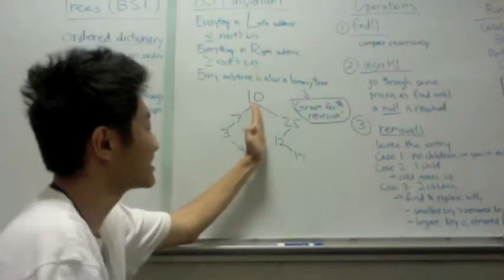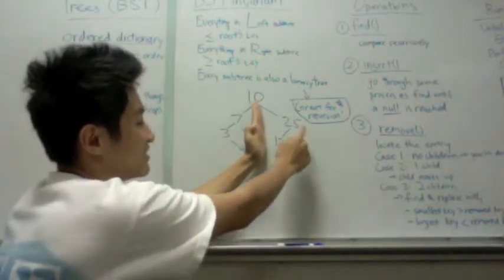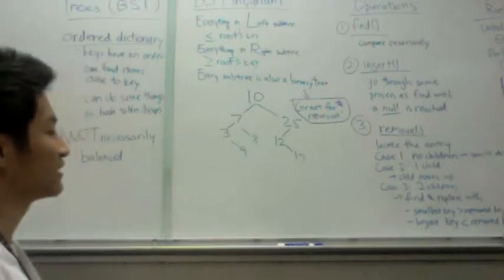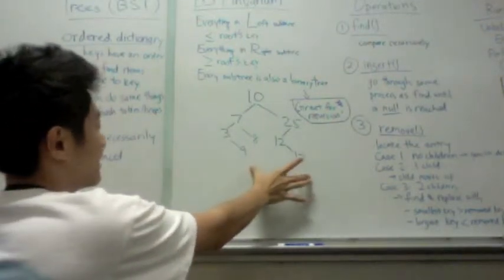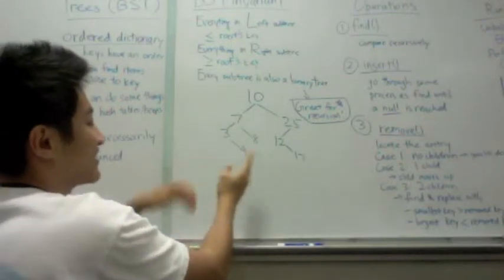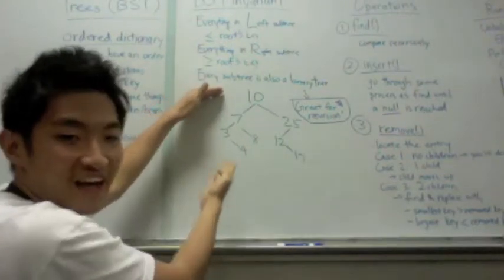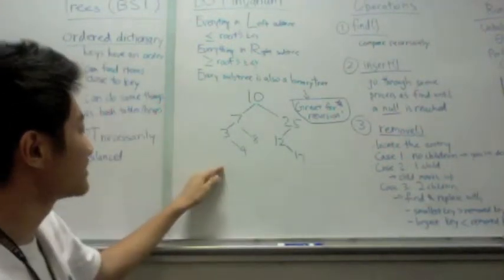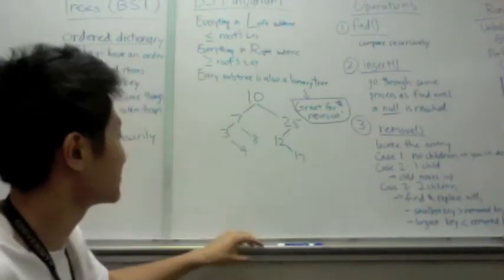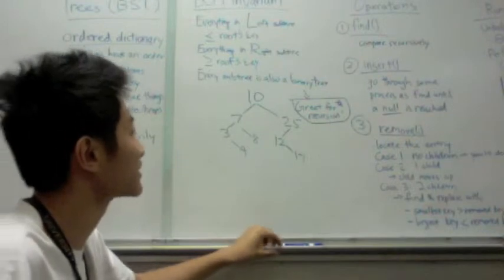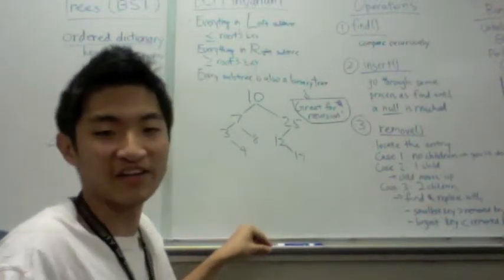On the other hand, everything on this side of 10 is greater. So 25, 12, and 17. You can see that here it's not necessarily balanced. This binary search tree has a height of 4, so it's not the most pretty binary tree, but this is a good example of what a binary tree can look like.